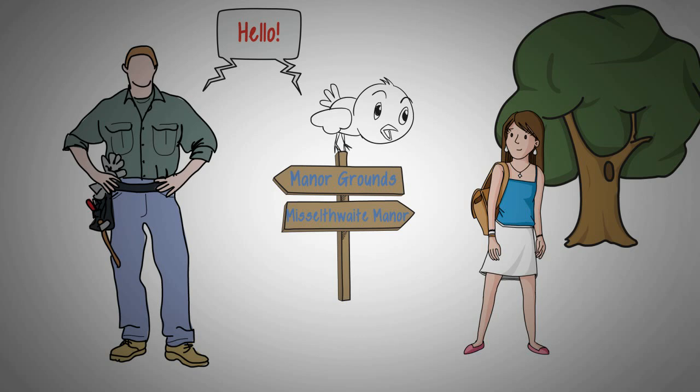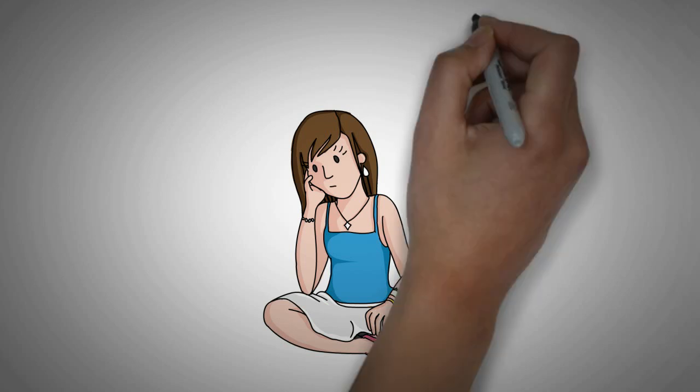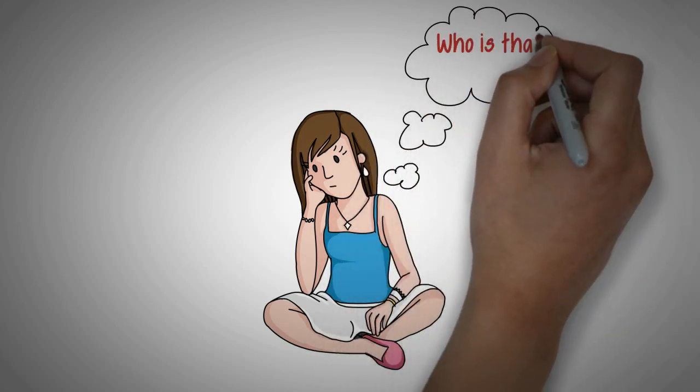For several weeks, Mary spends time outdoors and regains her health. She learns that Mistress Craven died after falling out of a tree in the garden and begins to feel pity for her uncle. More than once, Mary believes she hears a child crying inside the house, but the servants insist they hear nothing.